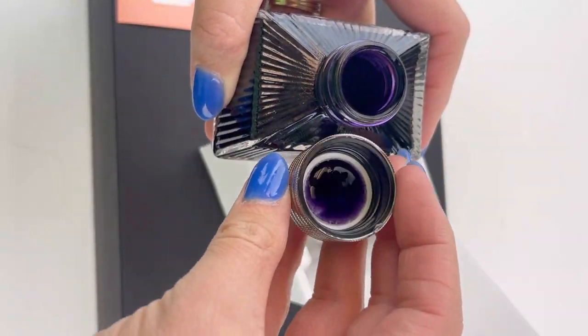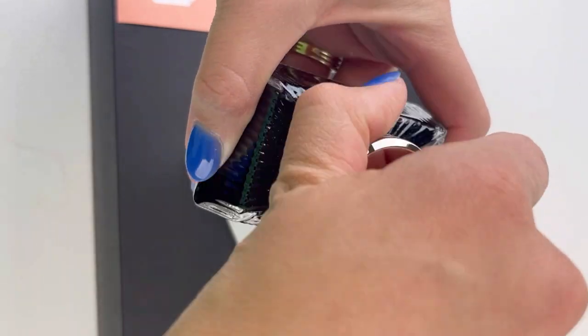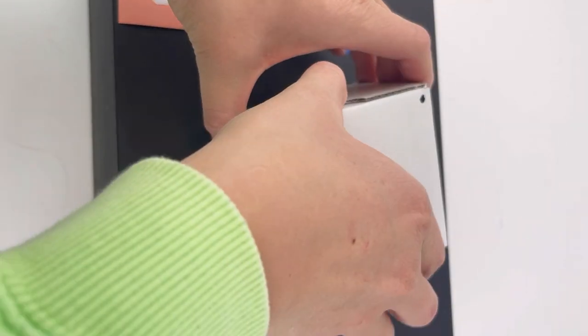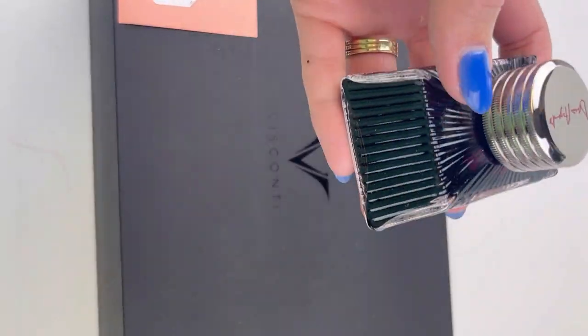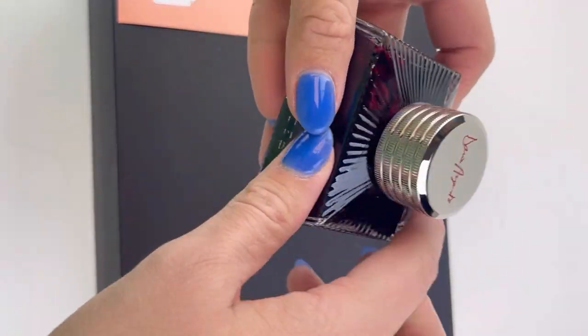It comes with two full-size bottles of ink in beautiful ink wells with the Dario Argento signature on the top of the cap there in red, and it's going to be a red ink and a black ink.